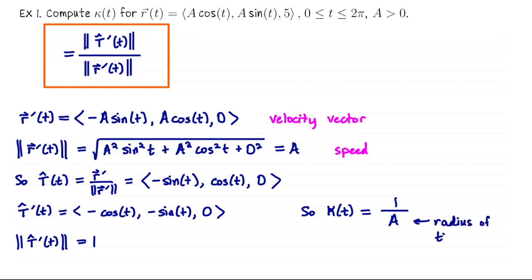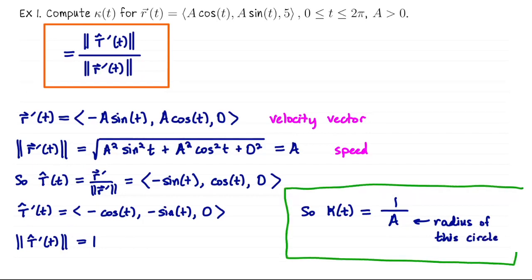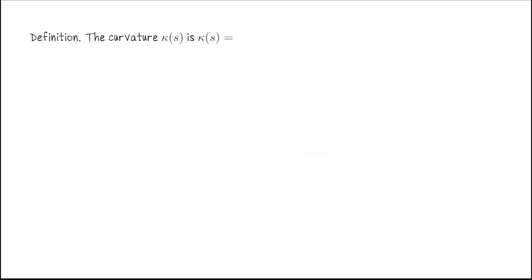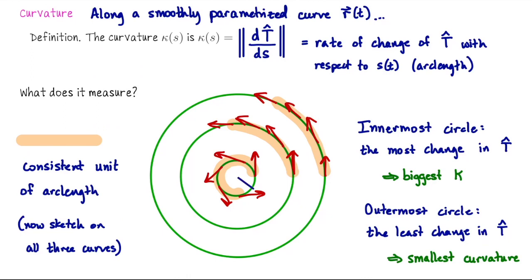The curvature is 1 over the radius of the circle, and that is true for any circle. Going back to the concentric circles example with radii a1, a2, a3: a1 is the smallest radius, so 1/a1 is the biggest curvature. For the outermost circle with the largest radius, 1 over that radius gives the smallest curvature.